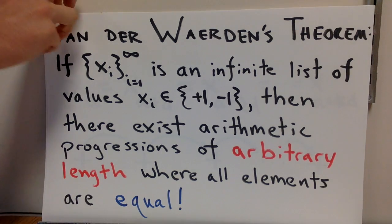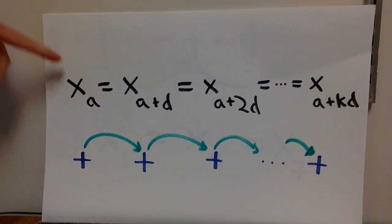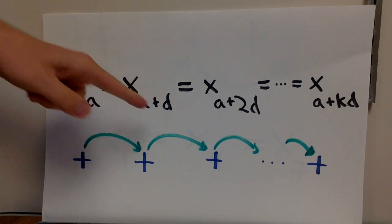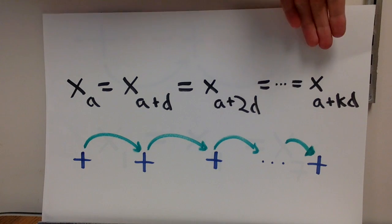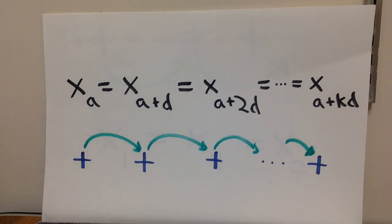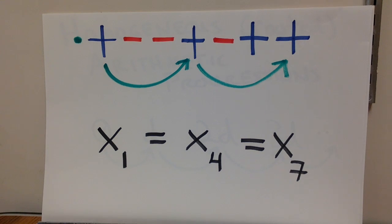Let's see an example. So the idea is, I'm going to look at x sub a, and then x sub a plus d, then x sub a plus 2d, and all the way down to x sub a plus kd, and along the way, I'm going to always see the same value. Here's an explicit sequence of pluses and minuses, and if I look at x1, x4, and x7, I see that I see plus one in each one of these instances. So what I'm doing is I'm starting at position one and taking jumps of length three.